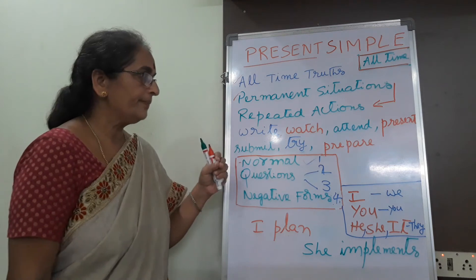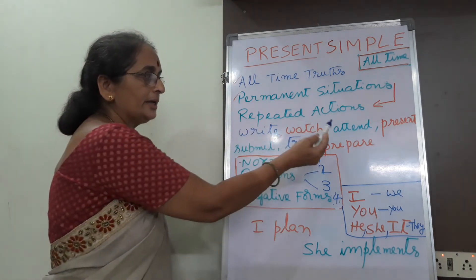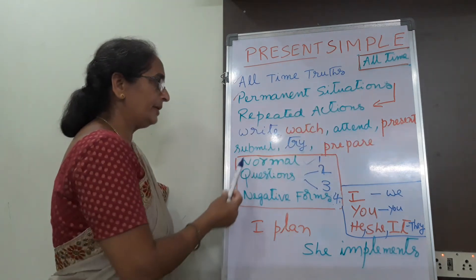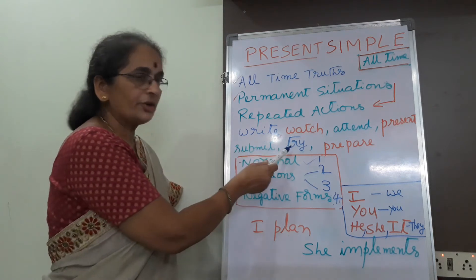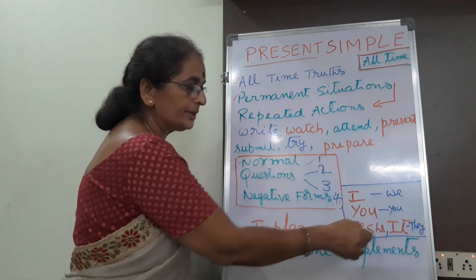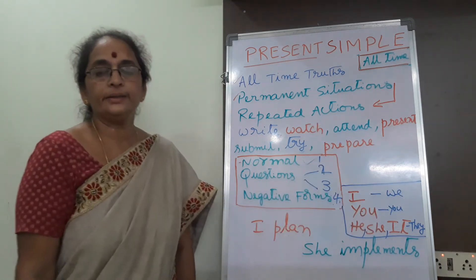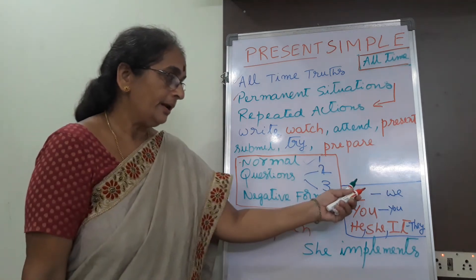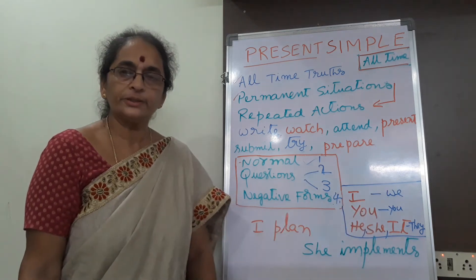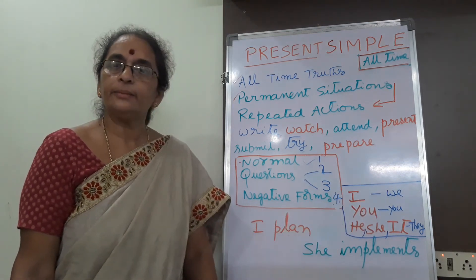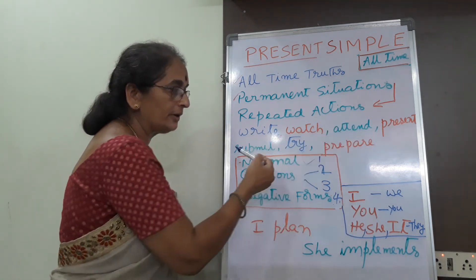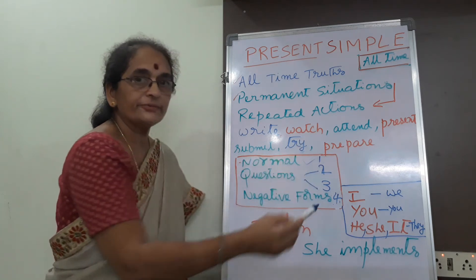For yes/no questions: Does she write the story? Does she watch the TV? Does she attend the meeting? Does she present PowerPoint in the seminar? Does she submit the project? Does she try this mathematical sum? Does she prepare this project report? This is how you apply all these numbers to verbs across four versions of sentences — first person singular and plural, second person singular and plural, third person singular and plural.